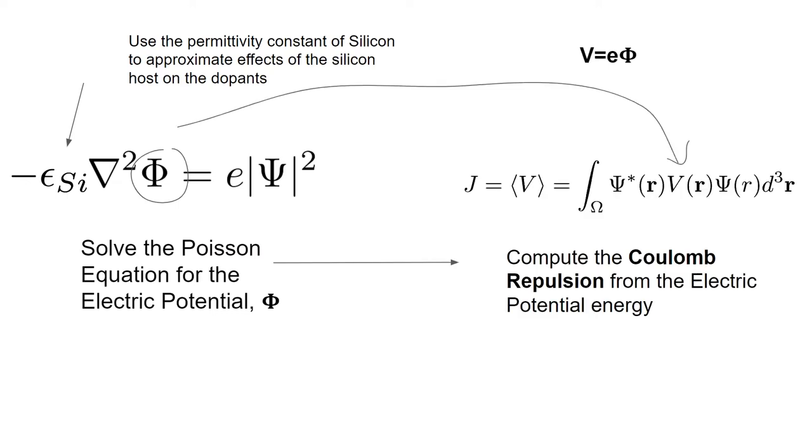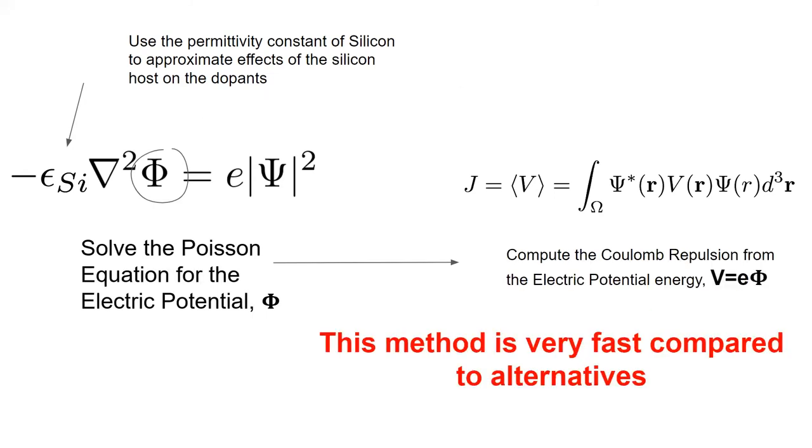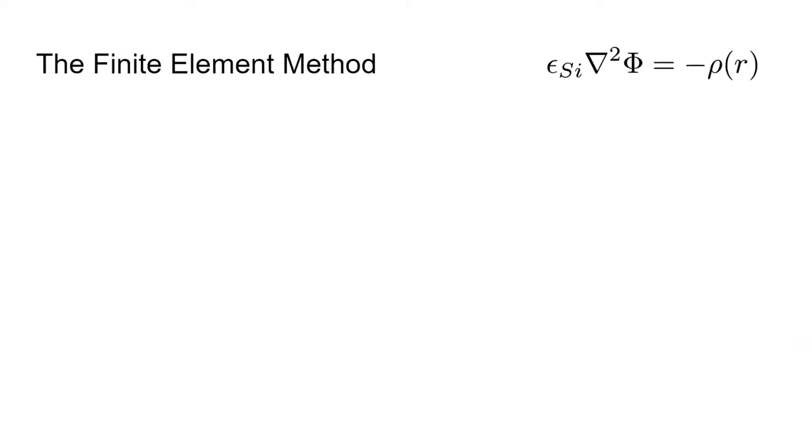we can then calculate the average value of the electric potential energy, which gives us the Coulomb repulsion term. This method is very fast in computing the Coulomb repulsion energy compared to other similar methods, because we only have to compute a three-dimensional integral. Also, we have a very fast method to solve the Poisson equation, and that method is called the finite element method.